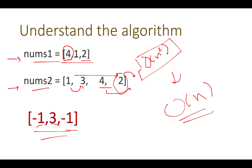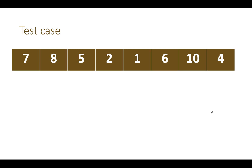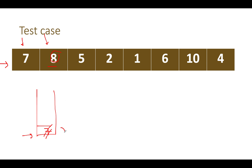We will use a monotonic stack to solve this question, reducing the time complexity to O(n). Let's look at the second approach with a slightly bigger test case. We start iteration with the first element, seven. We create a new stack and add seven to it. Next we see eight. Since eight is higher than the topmost element of the stack, we remove seven and add eight. We also add an entry in our map that for seven, the next higher element is eight.